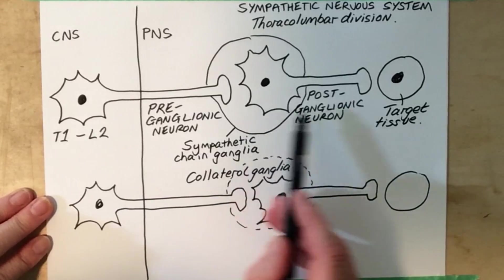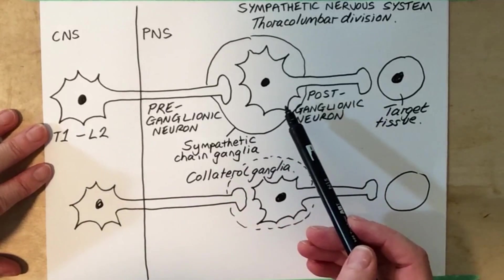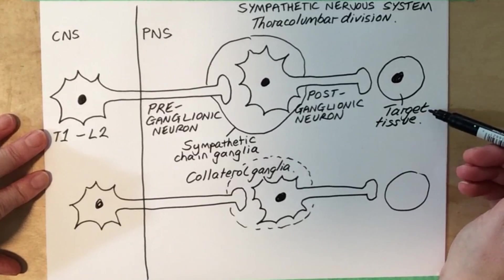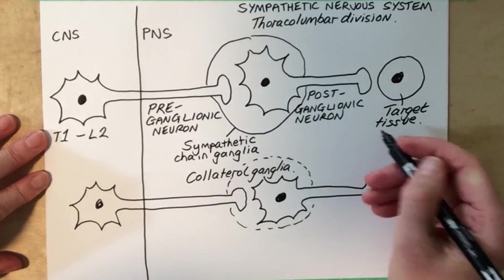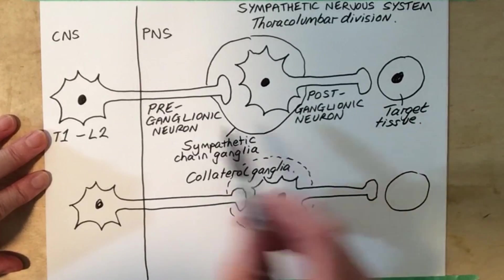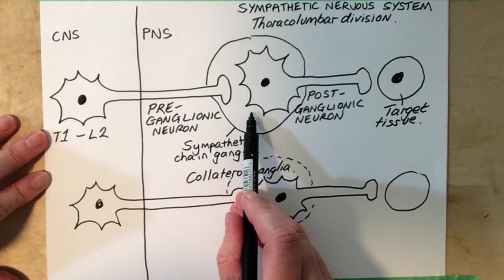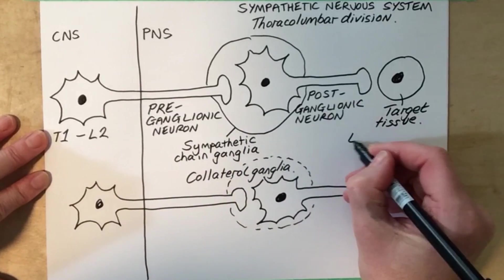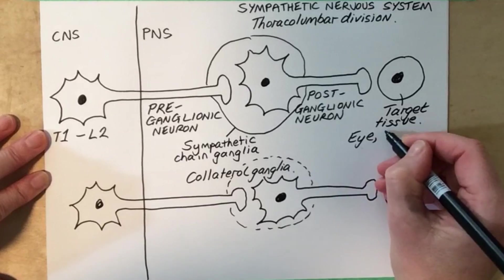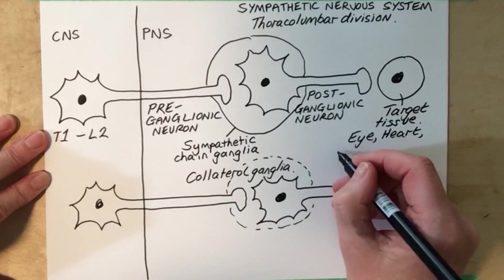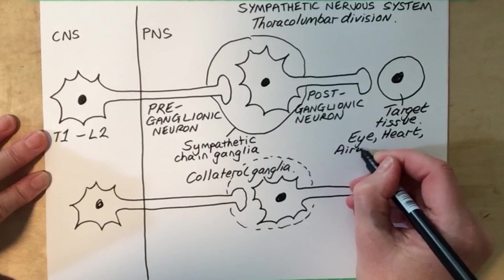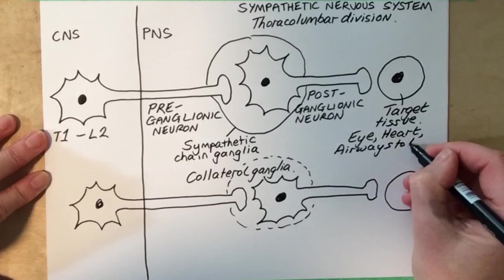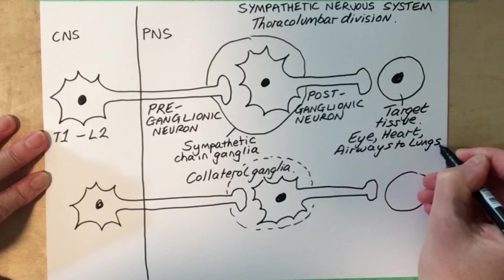The difference between these two pathways is the location of the ganglia, but mainly the difference is between the types of target tissues. In those pathways that run through the sympathetic chain ganglia and synapse there, target tissues include the eye, the heart, the airways to the lungs, and also the salivary glands.